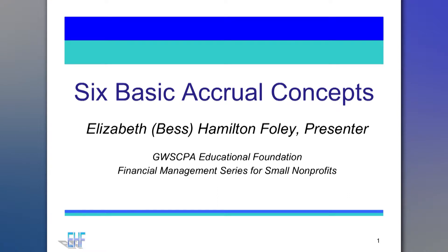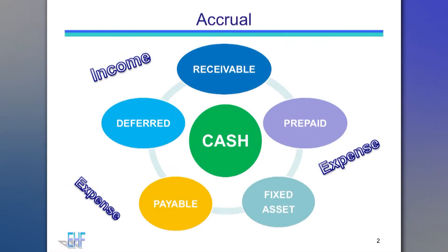Aligning income and expenses helps organizations to understand their business model and to determine whether activities will have a surplus or need to be subsidized. For example, you can only know that ticket sales and sponsorships cover only 40% of the cost to mount a theatrical production if you have aligned the relevant income and expense to create a profit and loss for that program.